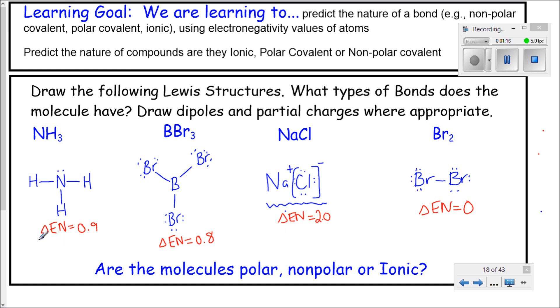If you look at the chart that's on your periodic table, you'll find out that this is a polar compound with polar bonds. This also has polar bonds. The NaCl has ionic bonds. And this Br2 here, with its electronegativity difference of zero, has nonpolar bonds.